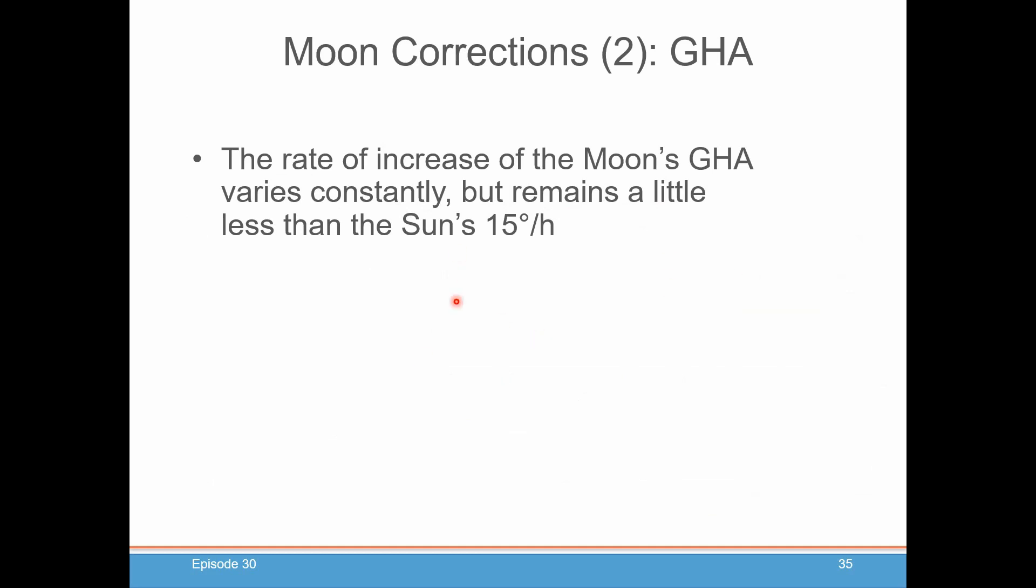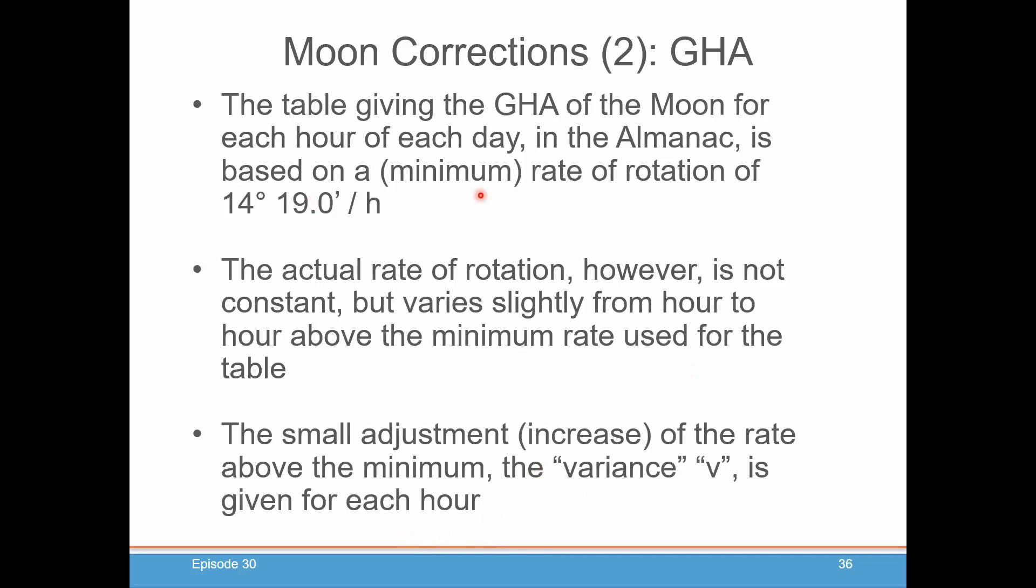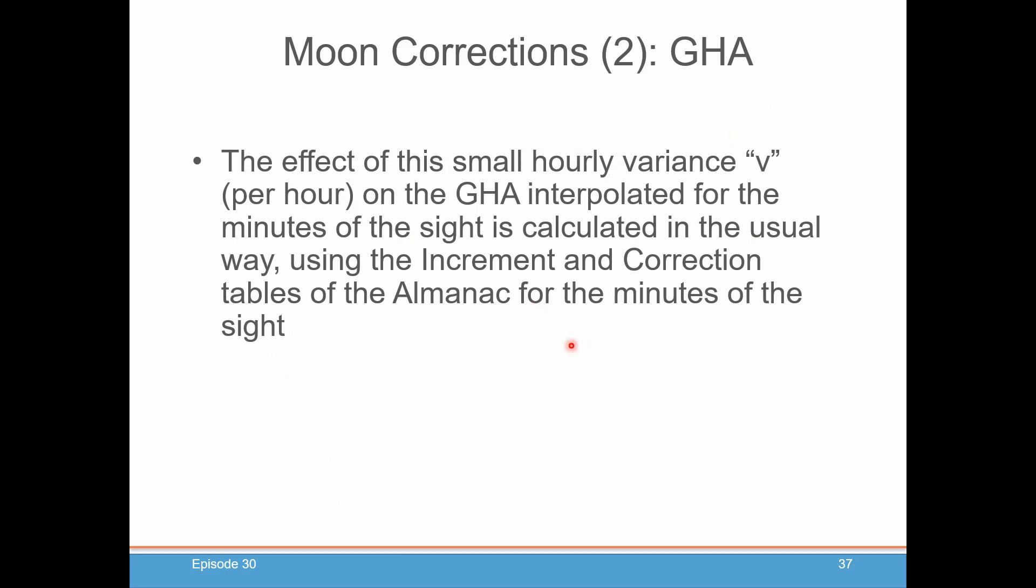To calculate the GHA, it's going to be very similar to the planets. If you remember, the planets move a little differently than the sun. And you had to have a V correction. That's at the bottom of the table for the days that you're doing your sight on. And typically it's a couple of minutes, usually a plus. Venus sometimes can be minus. But for the moon, it's always going to be a plus. You're going to get that V. You're going to apply it to the increments and corrections table using the moon column, which uses a slightly different rate of rotation. And you'll use your interpolation table, just like you did for the planets, with that V, to adjust the GHA.